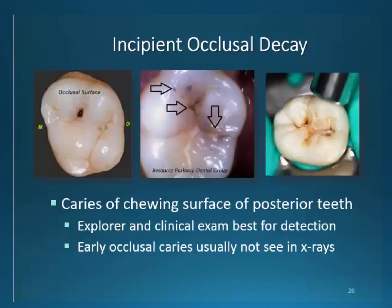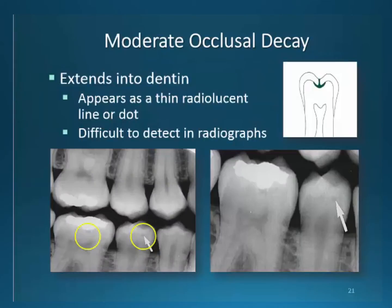Occlusal decay is located at the center of the tooth on the chewing surfaces. Visual exams are best used to detect the decay as well as using explorers. This classification is not seen on radiographs in early stages. Moderate occlusal decay may be seen on radiographs but is easily overlooked — they appear as small, oval, darkened areas immediately below the occlusal enamel junction and dentin. Take a moment to study these images and train your eye to notice the small lesions. They vary in size and are limited to one half the distance from the enamel-dentinal junction to the midline of the dentin.